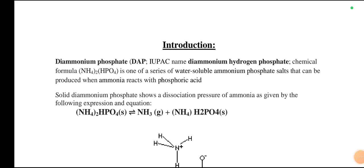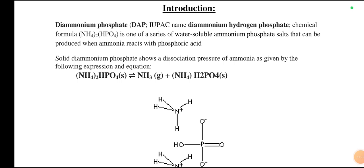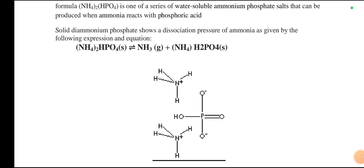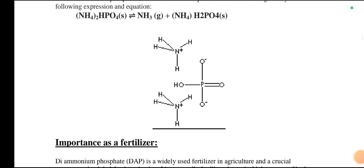Diammonium phosphate, IUPAC named diammonium hydrogen phosphate, has the chemical formula (NH4)2HPO4. It is one of a series of water-soluble ammonium phosphate salts that can be produced when ammonia reacts with phosphoric acid. In solid form, diammonium phosphate shows a dissociation pressure of ammonia, as given by its chemical equation. This structure consists of two ammonium cations and one phosphate ion.